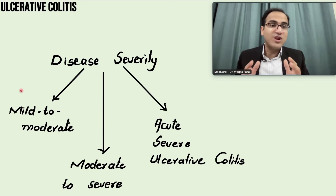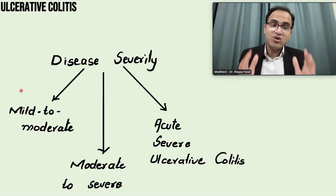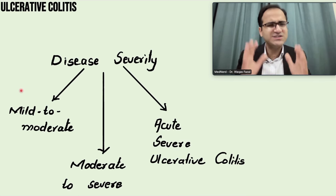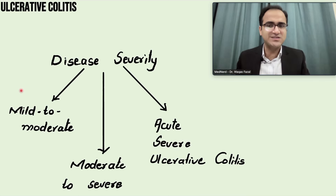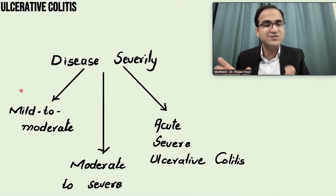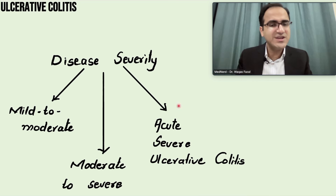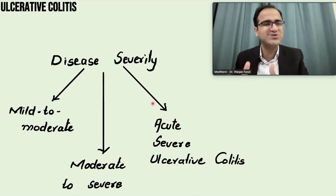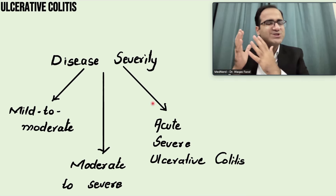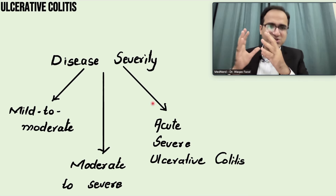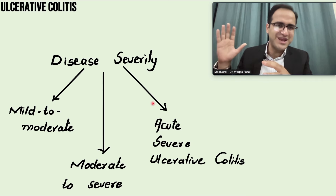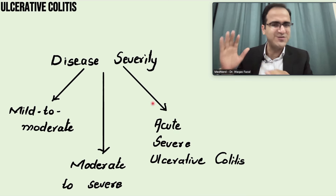The American College of Gastroenterology has divided ulcerative colitis patients into three categories: mild to moderate, moderate to severe, and acute severe ulcerative colitis or fulminant colitis. Classification is based on endoscopic and clinical features, CRP, and ESR, as discussed in the previous video on diagnosis of ulcerative colitis.